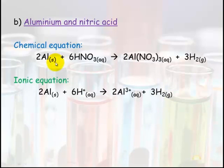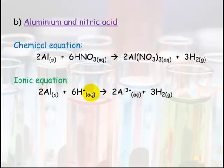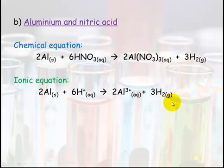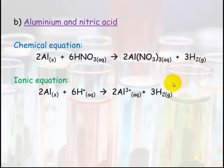Ionic equation — let's look at what doesn't change state. Aluminium went from solid to aqueous, so it's included in the ionic equation. Hydrogen goes from aqueous to gas — we include hydrogen. Your nitrate is your spectator ion, so it is not included in your final reaction. Balance your reaction — most of the time if you use the same numbers from above it will balance out, and sometimes you can make these a little bit simpler.